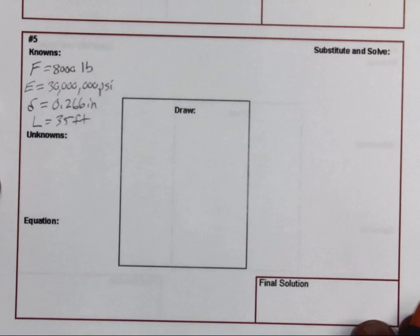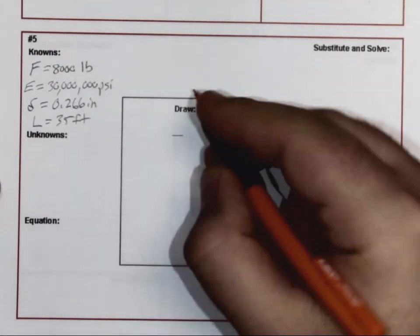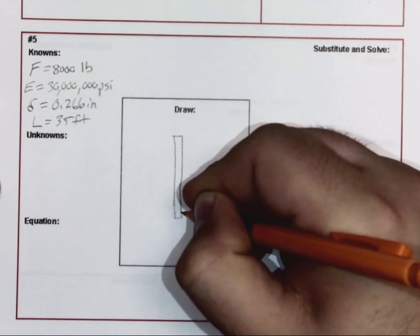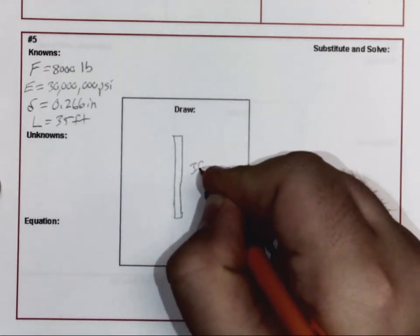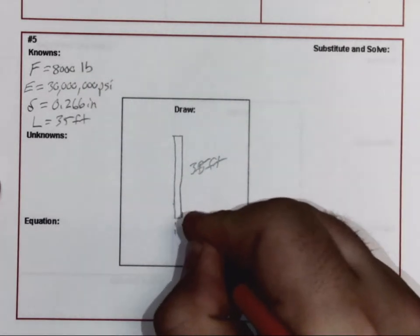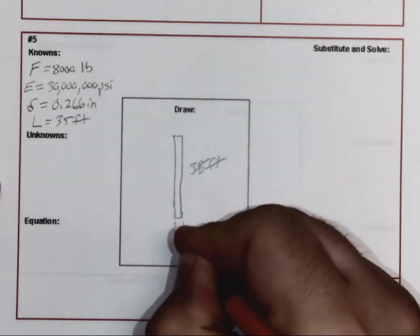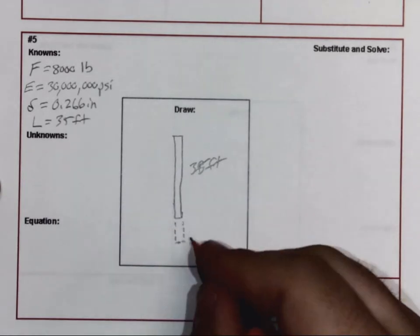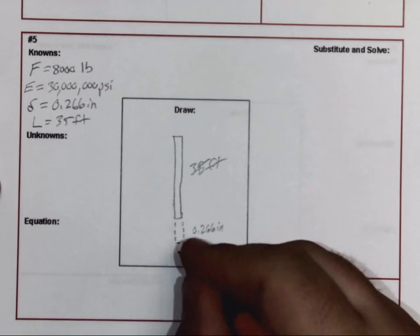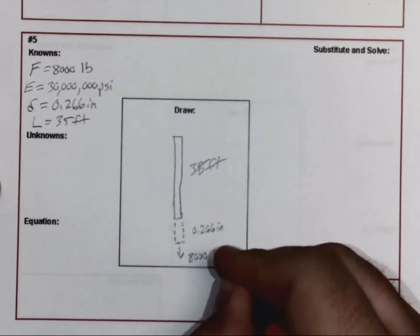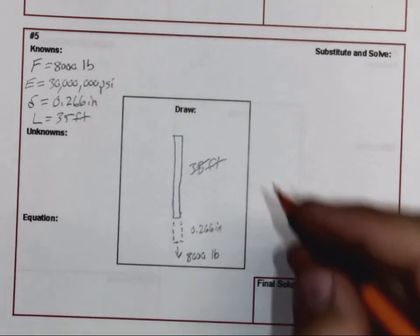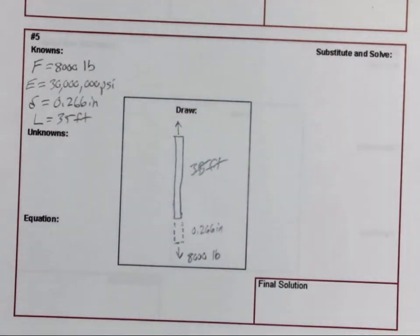Things we may need to know as far as our knowns, let's go ahead and draw this in. So I have this rod that's drawn in, 35 foot on the length. And then I'm going to show the stretch by using some hidden lines. There's my amount of stretch, 0.266 inches. 8,000 pounds is pulling down on it. And of course it's attached probably up here toward the top.